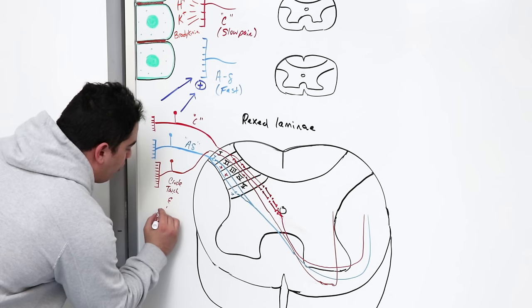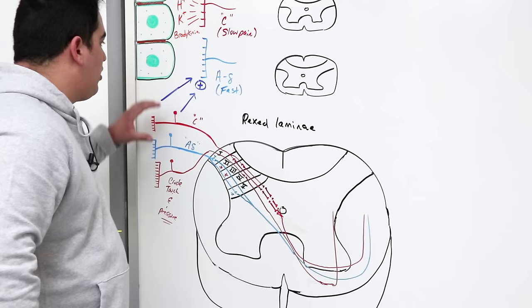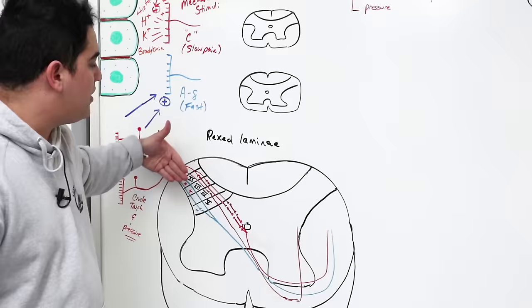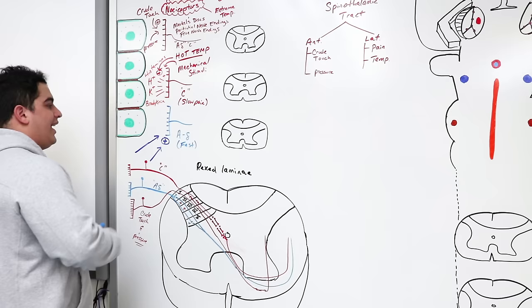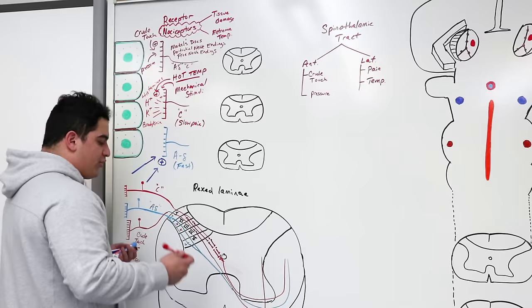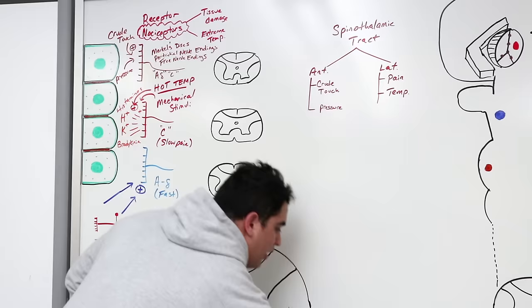Now we know the pathway, what it's carrying, the receptors, and how it enters the spinal cord. There's one more really important point: the ascending and descending system — the tract of Lissauer — which is especially important because of its relationship with certain types of lesions.